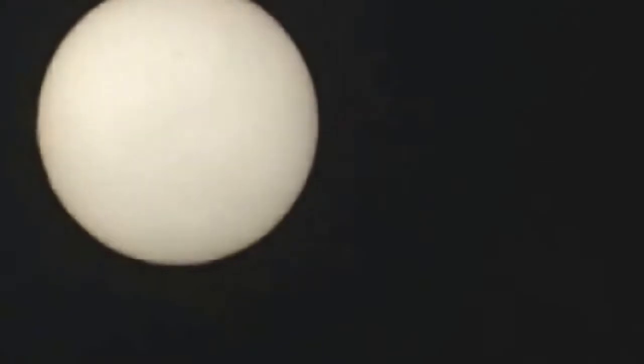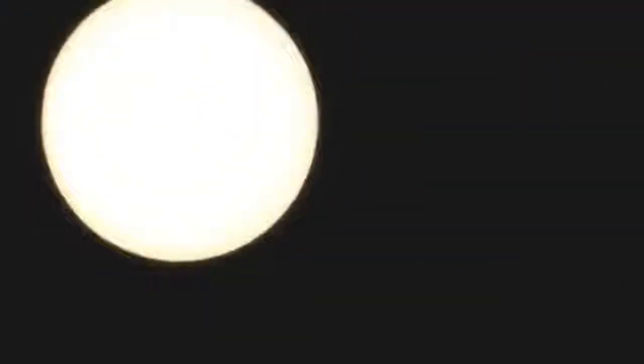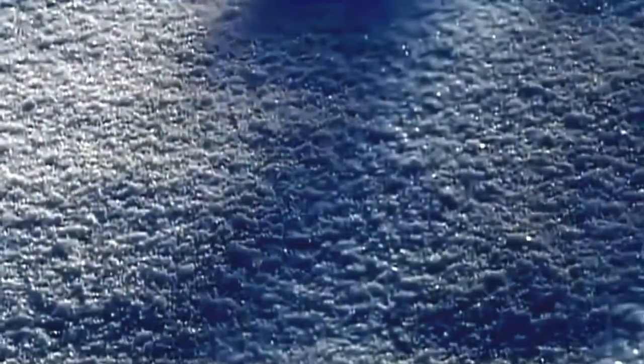Unimpeded, the trip from the core to the surface would take the photons a matter of seconds. In reality, the sunlight that shines on us today may have been created during the last ice age.